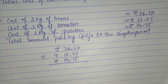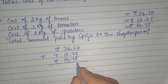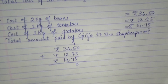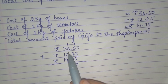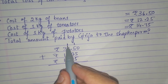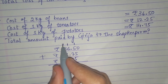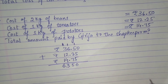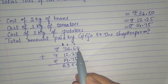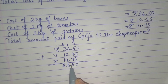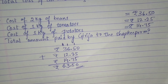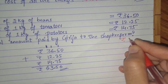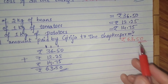Let's add all the rupees, starting from the right side. 0 plus 5 is 5. 5 plus 5 is 10 — write 0, carry 1. 1 plus 5 is 6. 6 plus 2 is 8. 8 plus 7 is 15 — write 5, carry 1. 6 plus 2 is 8. 8 plus 4 is 12. 12 plus 1 is 13 — write 3, carry 1. 3 plus 1 is 4. 4 plus 1 is 5. 5 plus 1 is 6. Now write the decimal point after 2 digits — everywhere we have 2 digits after the decimal point. So the answer is 63 rupees 50 paise. The total amount paid by Girija to the shopkeeper is 63 rupees 50 paise.